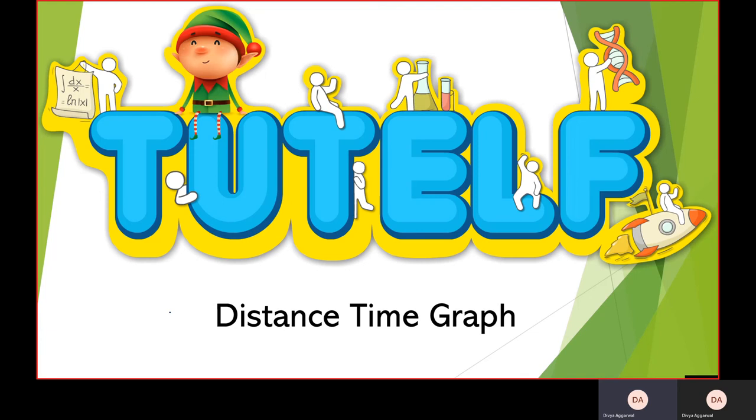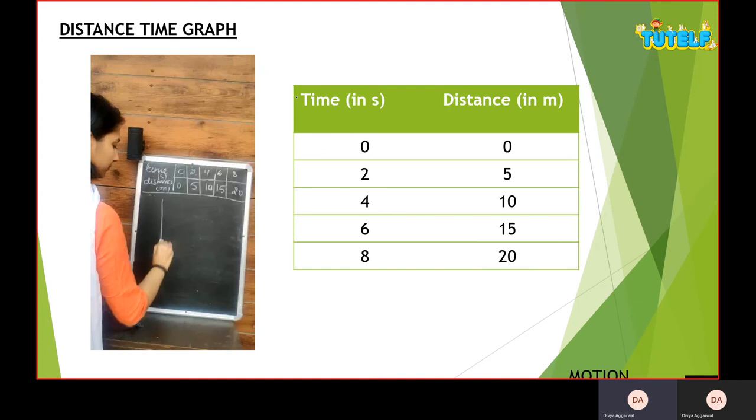I have my time as the independent variable, so it is written on the x-axis and my distance is a dependent variable, so I'll have it on my y-axis. About this dependent and independent variable, I have already discussed it in my graph video.